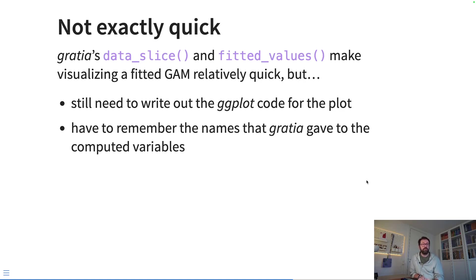And those haven't remained fixed over the life of gratia. In fact, one of the recent versions we actually updated them so that they had a dot in front of them so that they didn't clash with any of the variable names that users might have in their data. And so you have to remember a lot of these things, and it's a lot of tedious code to write out. And if you're doing this a lot like I am, then you don't really want to be writing out that ggplot code all the time.